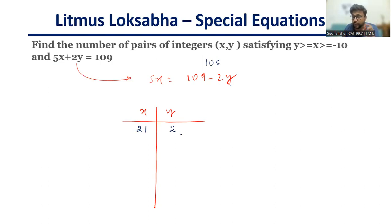As soon as you found that one solution, the game is done. Now x will start moving with the coefficient of y which is minus 2, and y will start moving with the coefficient of x which is 5. So the next solution will be y is equal to 7 and x will be 21 minus 2 which is 19. Next solution will be 7 plus 5 which is 12 and 19 minus 2 which is 17. Next solution is y is equal to 17 and x is equal to 15.